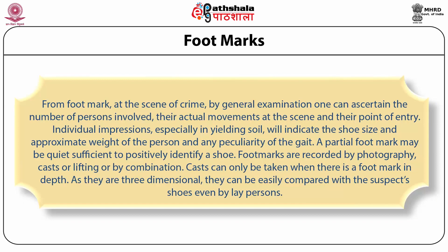Footmarks: from footmarks at the scene of crime, by general examination one can ascertain the number of persons involved, their actual movements at the scene, and their point of entry. Individual impressions, especially in yielding soil, will indicate the shoe size, approximate weight of the person, and the peculiarity of the gait. A partial footmark may be quite sufficient to positively identify a shoe. Footmarks are recorded by photography, cast, or lifting, or by a combination. Casts can only be taken when there is a footmark in depth; as they are three-dimensional, they can be easily compared with the suspect's shoes even by laypersons.